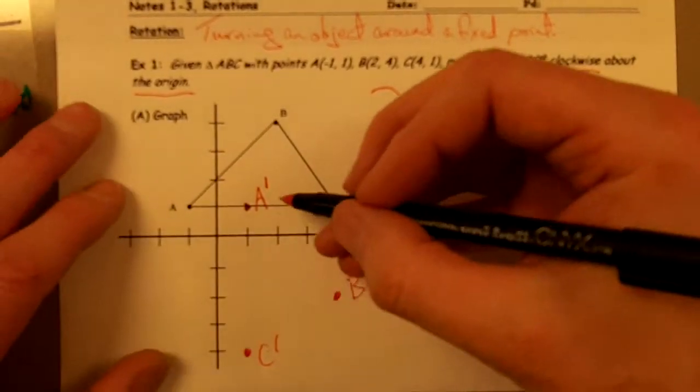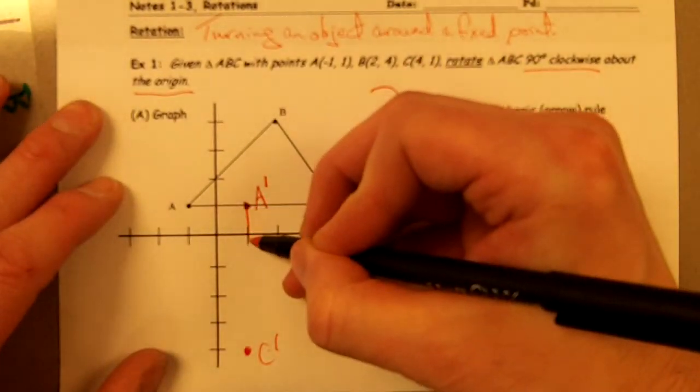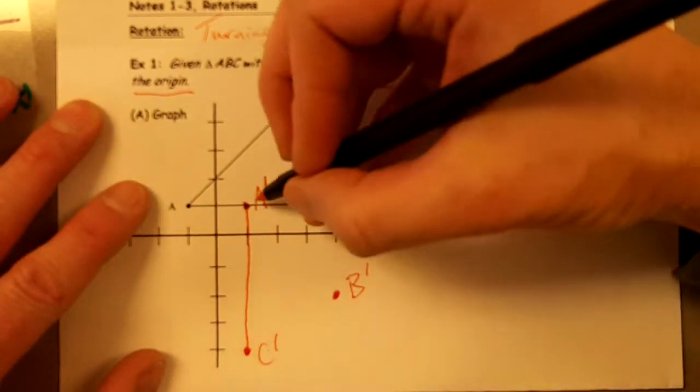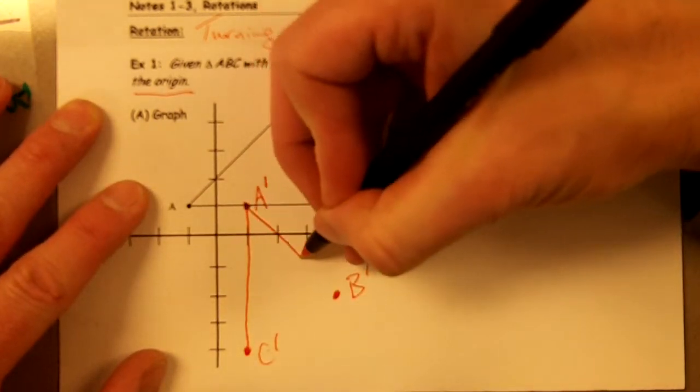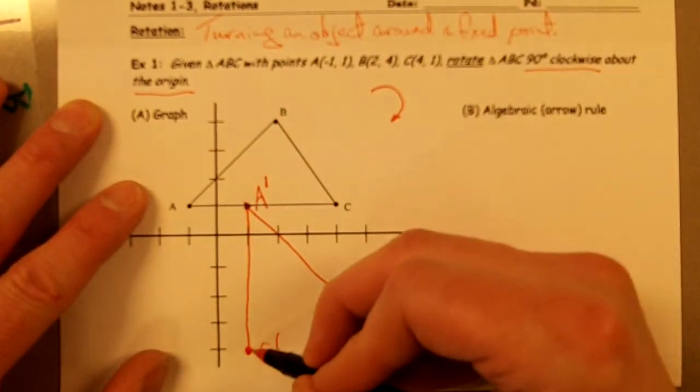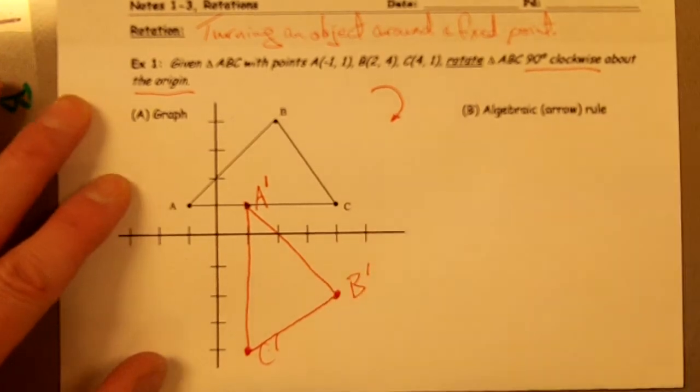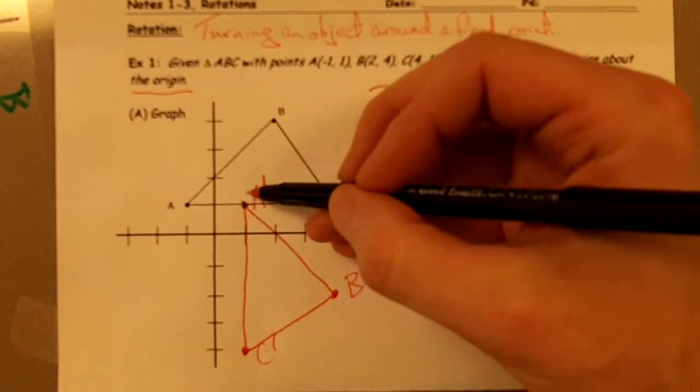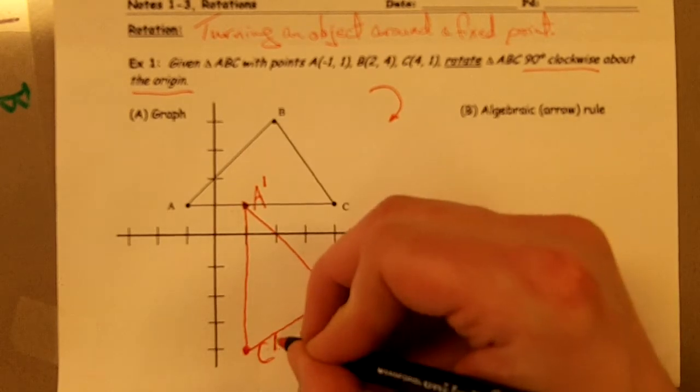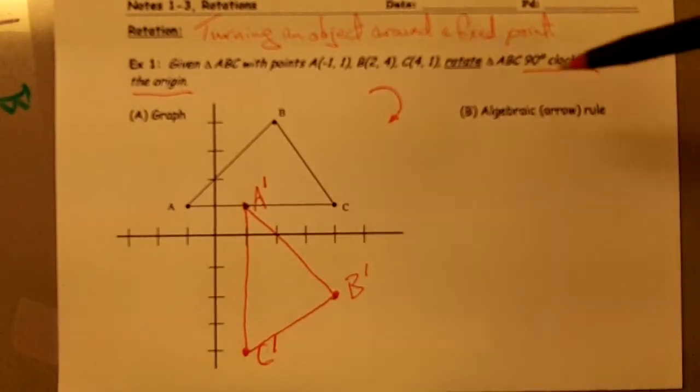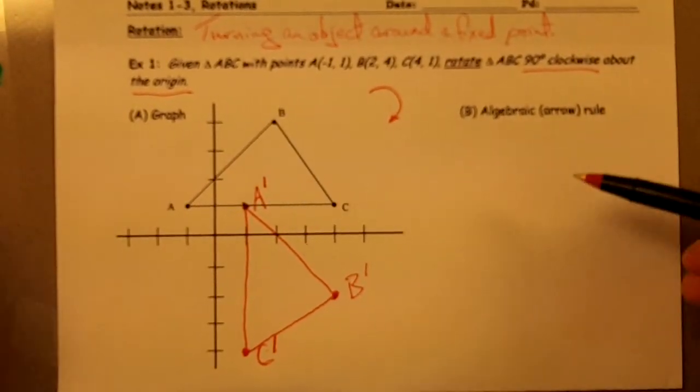And now I take my transparency off and then I connect up my points here. My three vertex points for my triangle. And there's my rotated triangle, A prime, B prime, and C prime. So I've rotated it clockwise about the origin.